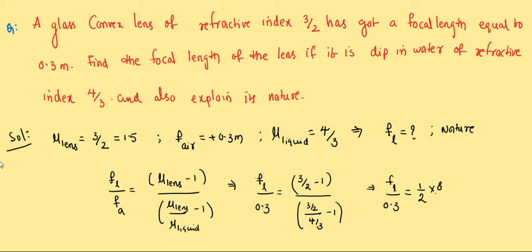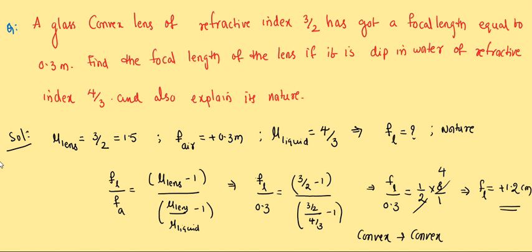The focal length in liquid is positive, which means the convex lens in water still behaves like a convex lens — no change in nature. This is because the refractive index of the lens (1.5) is greater than the refractive index of the liquid water (4/3 ≈ 1.33), consistent with case 1.